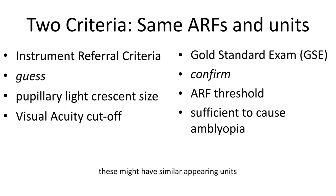Remember that amblyopia risk factors and confirmatory examination levels may be reported with the same name and the same units. The amblyopia risk factors are instrument referral criteria for screening - they are a guess. They may be associated with a pupillary light crescent size in a photo screener or a visual acuity screening cutoff point. In the gold standard examination, this is a confirmation - an amblyopia refractive risk factor threshold that a group has determined to be sufficient to cause amblyopia.